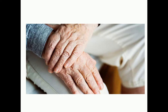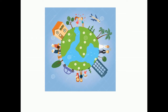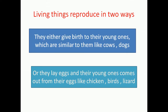If this happens, there will be no one to take their place when they are gone. So, reproduction is a very important process to keep life going on this planet. Now we shall move on and learn how living things reproduce.